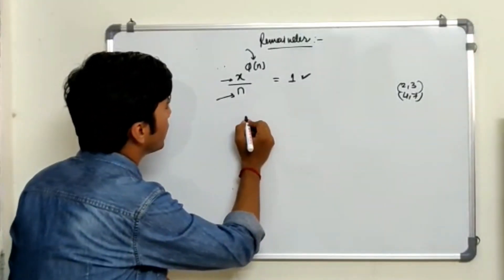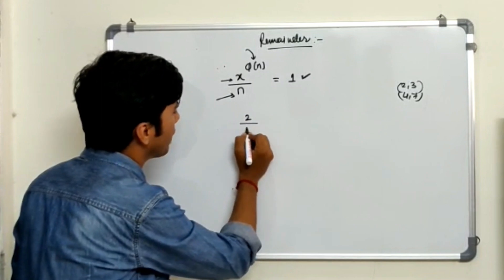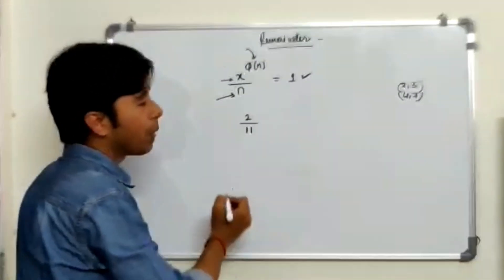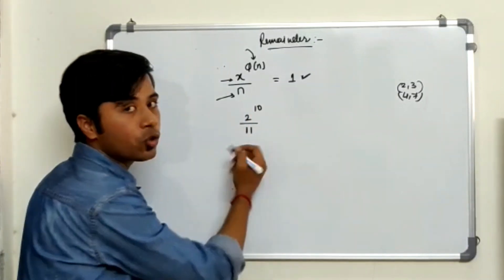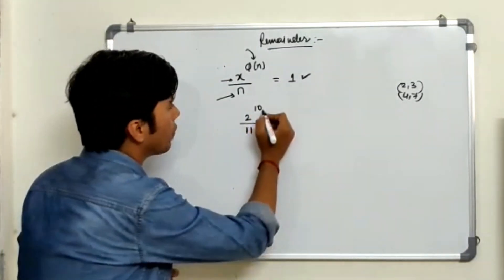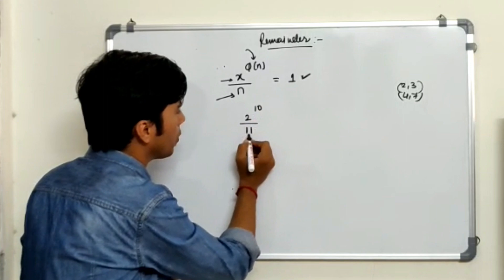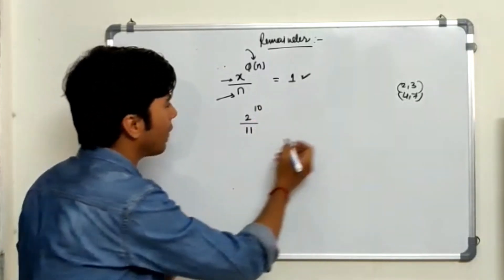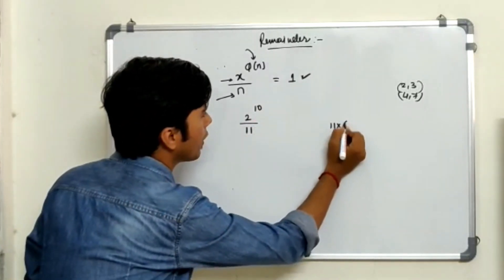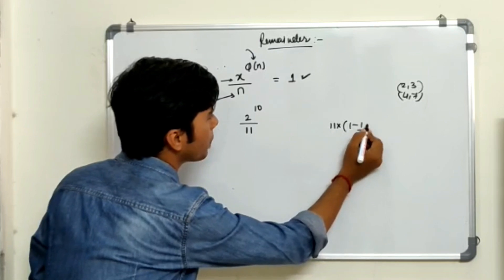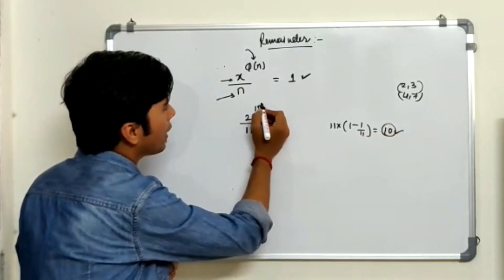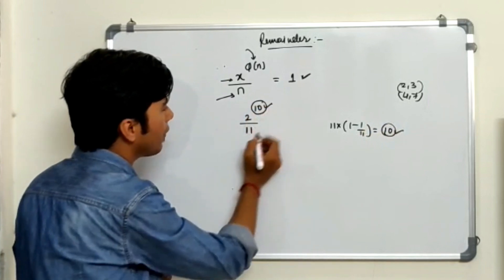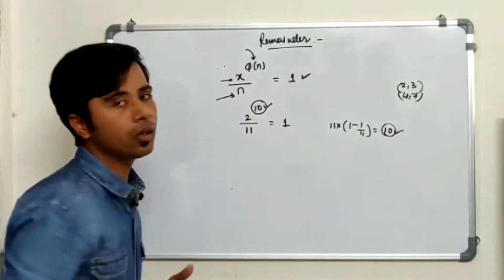Let's try some questions. Let's say if I have 2 to the power 10 divided by 11. So I know that 2 and 11 are coprime to each other. So what will be the power here? Power is 10. So what is the totient of 11 guys? Totient of 11 is going to be nothing but 10 itself. Right? So I know that the power here is totient of 11. So my remainder is straight away going to be 1.